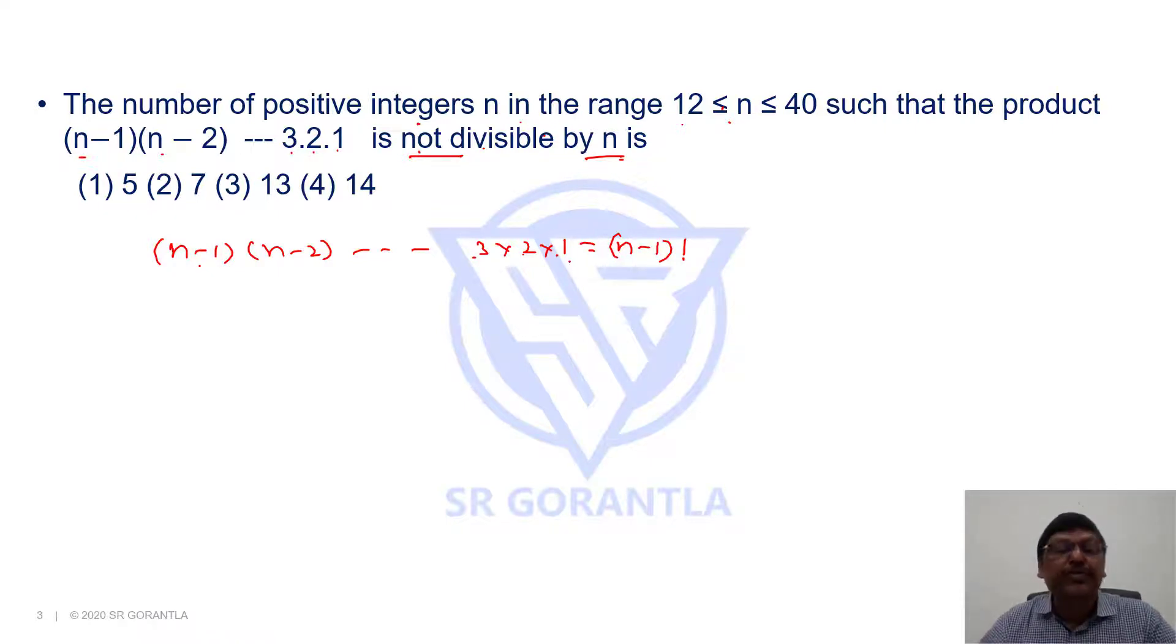This (n-1) factorial is not divisible by n. Students, (n-1) factorial is not divisible by n means that n should be a prime number. Let's see, suppose here n is between 12 and 40.